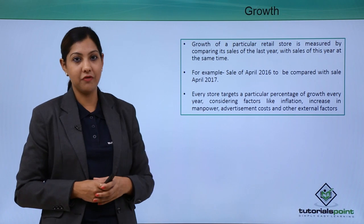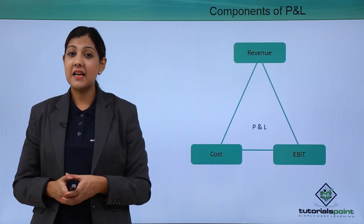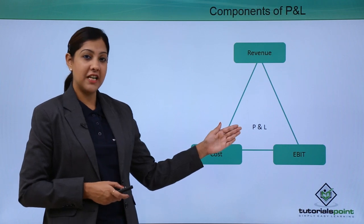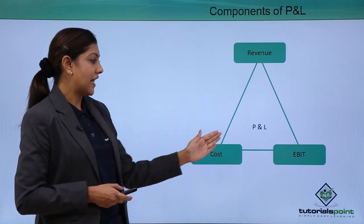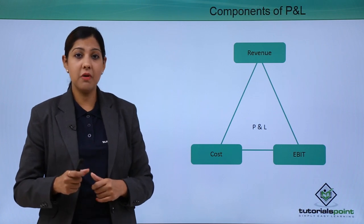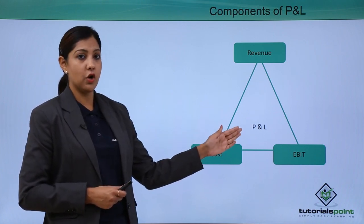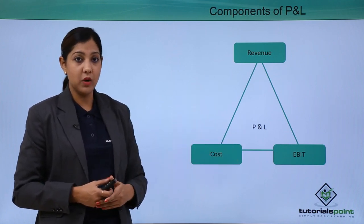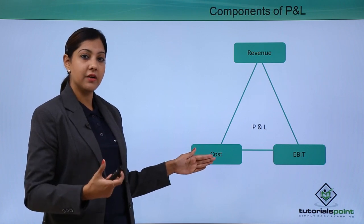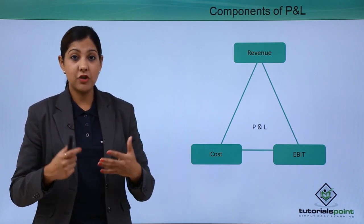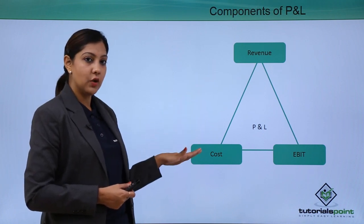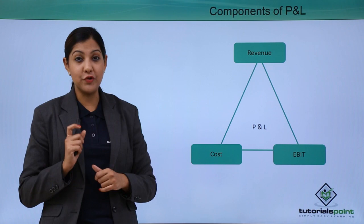Let's understand profit and loss, or P&L. There are three different aspects to P&L: revenue, cost, and EBIT — which stands for Earnings Before Interest and Tax. Revenue is the total amount of money coming in. Cost includes manpower, electrical charges, water supply, and employee salaries. Calculating EBIT helps you understand how much profit or loss you have really made as a shop owner.